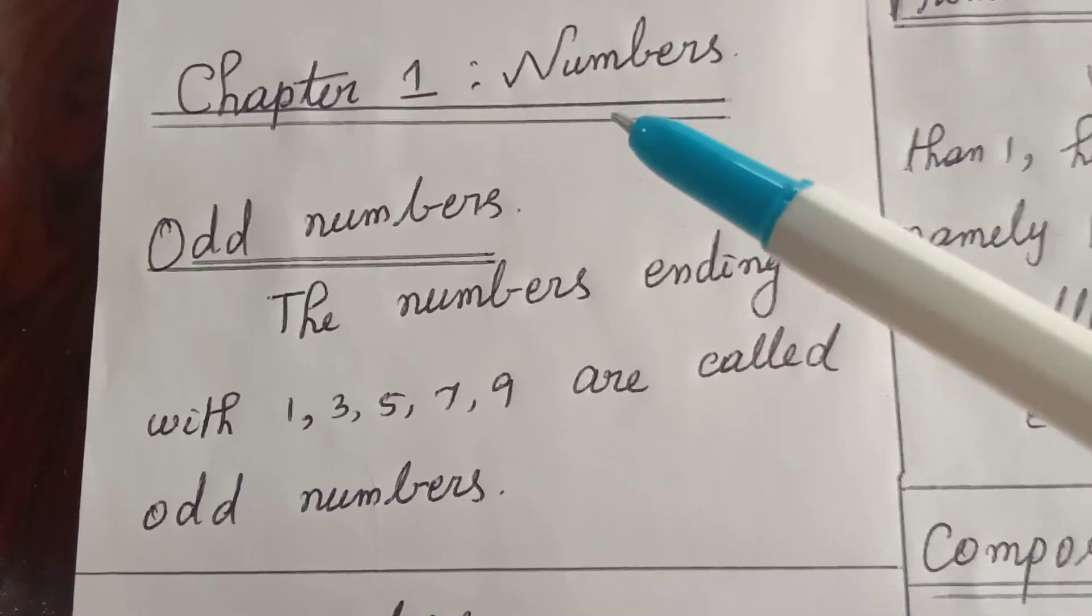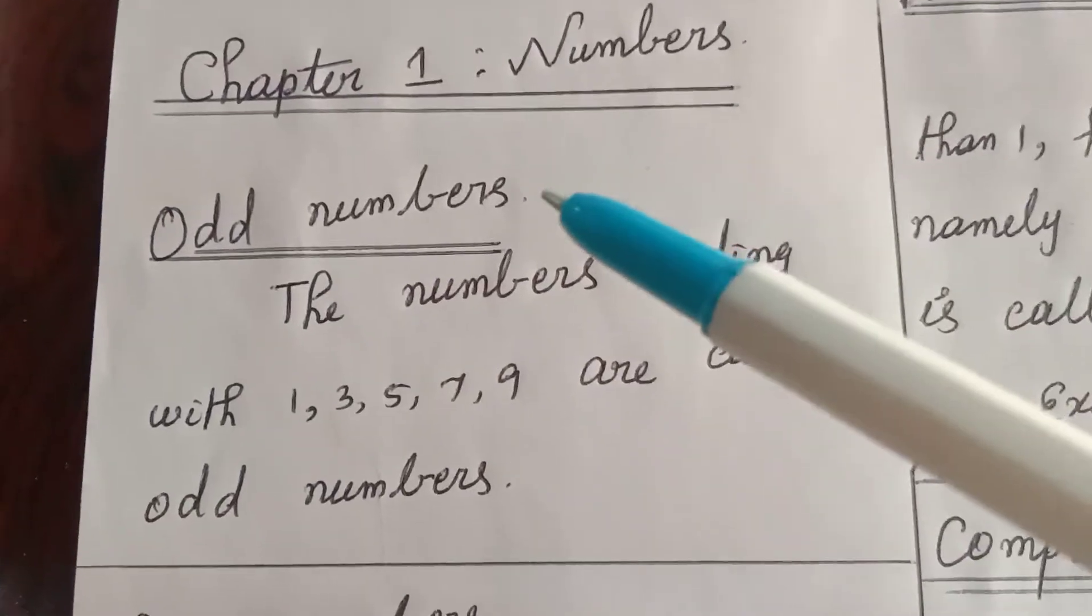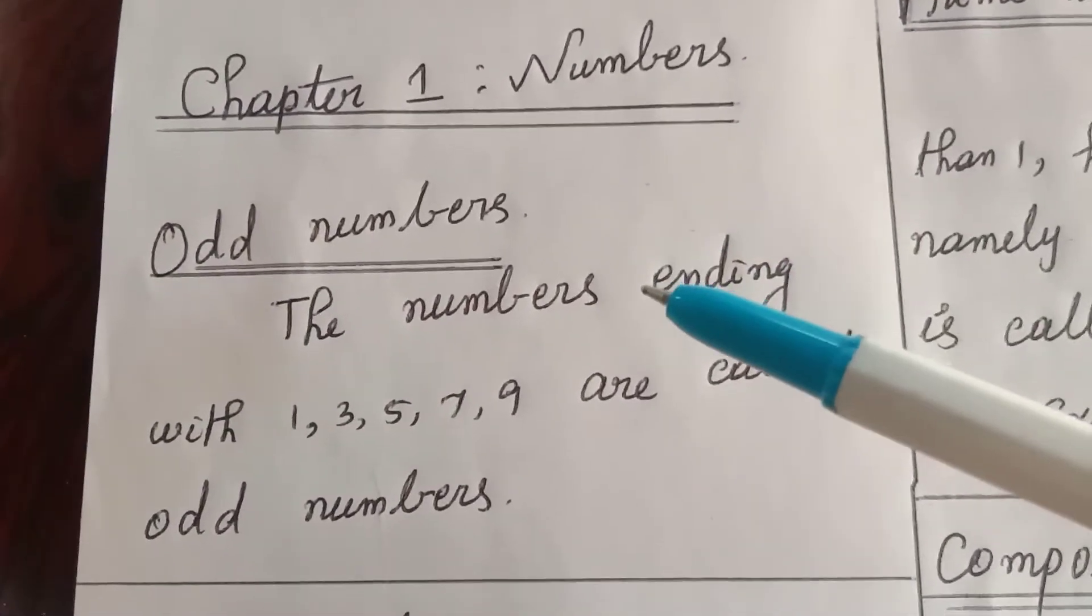Today we are going to see the topic numbers. There are different types of numbers: odd numbers, even numbers, prime numbers, composite numbers.